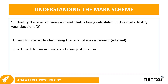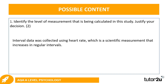For question one — identify the level of measurement and justify your decision — one mark for correctly identifying the level of measurement. Hopefully you got 'interval.' There was another mark available for a clear and accurate justification. The mark scheme answer: interval data was collected using heart rate, which is a scientific measurement that increases in regular intervals. So you don't just say 'interval data' and move on — you explain why you would have chosen interval data.